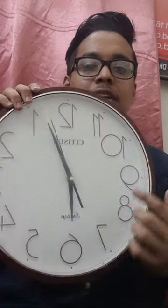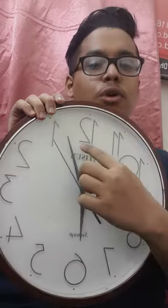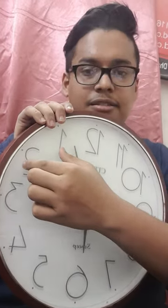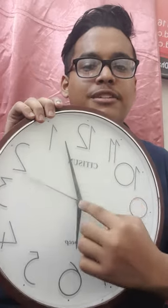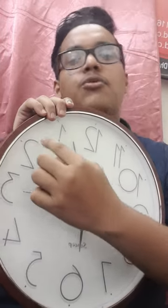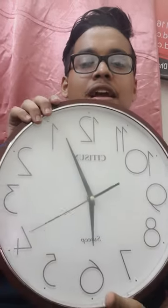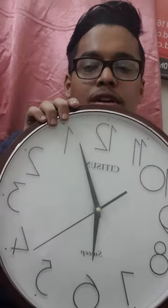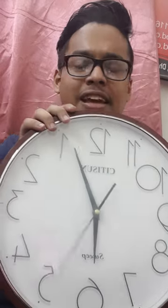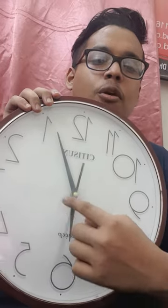Here there are numbers starting from 1 to 12. Every number describes five minutes. As soon as the longer hand crosses from one number to another, it means that we have crossed five minutes. A day consists of 24 hours and 60 minutes in an hour.